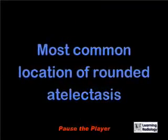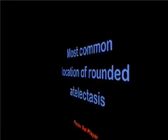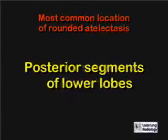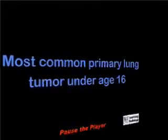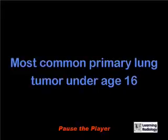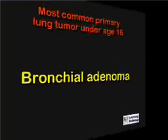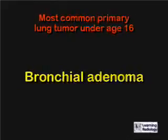What is the most common location of rounded atelectasis? The posterior segments of the lower lobes. What is the most common primary lung tumor under the age of 16? A bronchial adenoma.